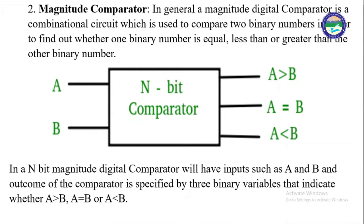A magnitude comparator is basically a combinational circuit. We know that a combinational circuit is a circuit in which the output does not depend upon the previous state. This type of magnitude comparator compares two binary numbers in order to find out whether one binary number is equal to, less than, or greater than the other. In magnitude comparators, we have two inputs and three outputs: A equal to B, A less than B, and A greater than B.